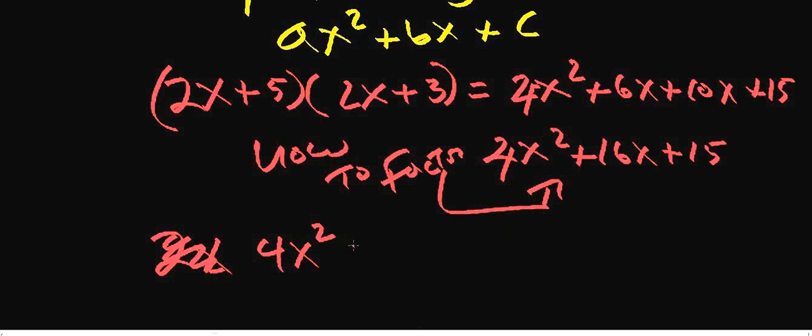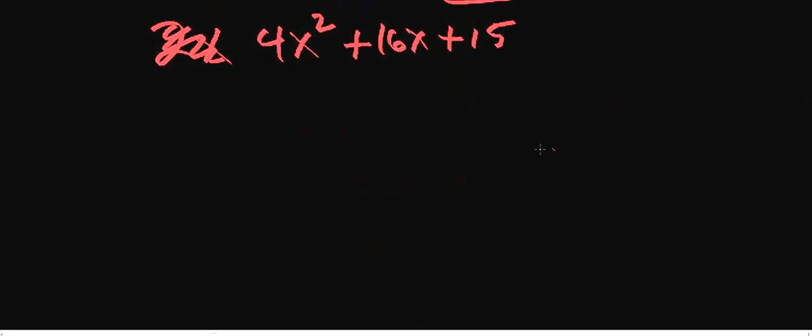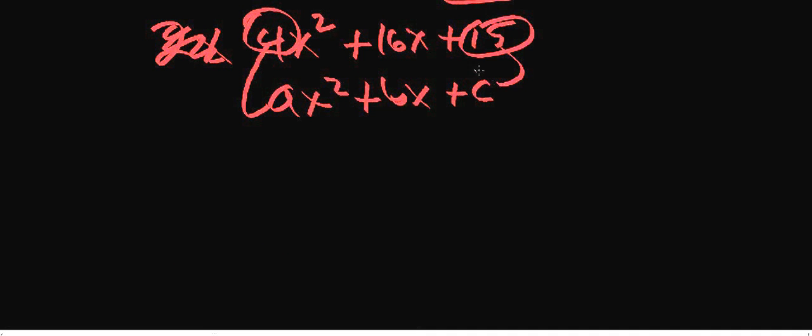So if you've got 4x squared plus 16x plus 15, we're given this and we're saying, let's factor it. We're going to think about our standard form. Here we need some factors of 4, factors of C, that when we add them together give us this B.